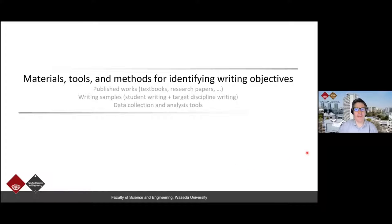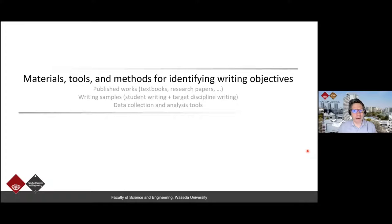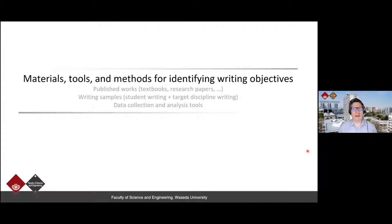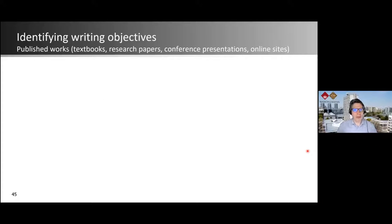Part two looks at the materials, tools, and methods for identifying writing objectives. We're often in a difficult situation: we don't know what the writing objectives of students are because we're not from their field and don't normally write what they write. For example, how many business emails, nurse case reports, legal documents, or physics research papers have you written? Probably not many. So it's really important to understand what students need to do.